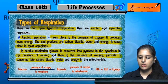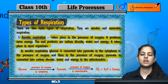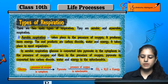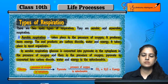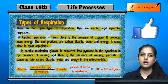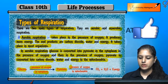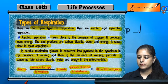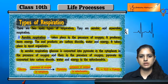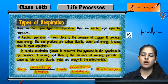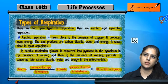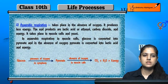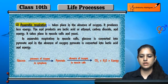In the presence of oxygen, glucose is broken down in the cytoplasm into pyruvate. Then pyruvate, in the presence of oxygen, enters the mitochondria and is broken down into carbon dioxide, water, and energy. This is why mitochondria is called the powerhouse of the cell, because energy is produced there. This is aerobic respiration.